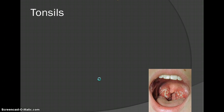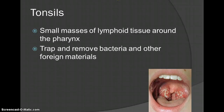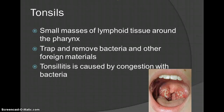Tonsils — yes, you could live without them, but are they beneficial? Yes. That picture is streptococcus bacteria that has gotten caught in the throat — it's all inflamed. Tonsils are small masses of lymphoid tissue around the pharynx, which is your throat. Their purpose is to trap and remove bacteria and other foreign materials. Those who have tonsillitis constantly get their tonsils out because they get inflamed almost too easily — that's caused by congestion with bacteria.